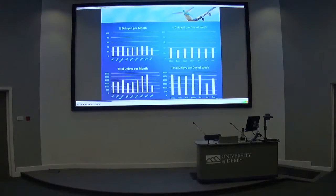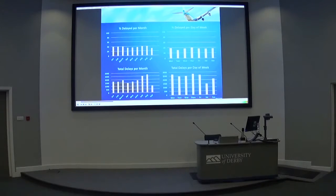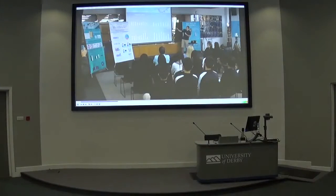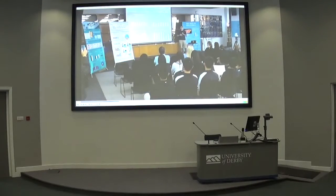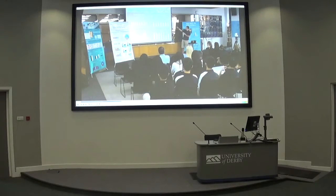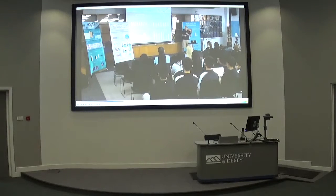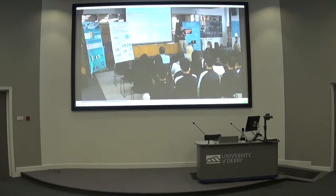We're going to look at a couple of graphs: percent delay per month, percent delay per day of the week, and total delay per month and total delay per day of the week. Starting at the upper left, the percent delay per month is fairly constant — it goes from about 33 to 40 percent of flight delays, which is a pretty big number. For day of the week, it also ranges between about 33 to 40 percent, so that's very consistent. In the total delays, September is significantly low.